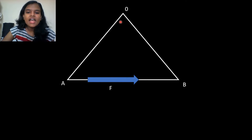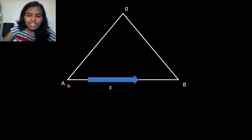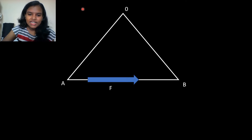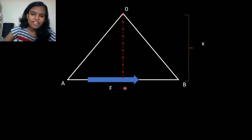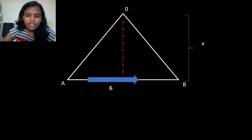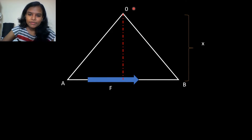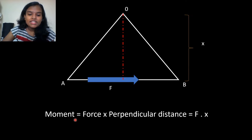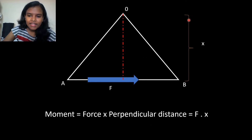The moment equals the perpendicular distance. This is where the perpendicular distance is. This is our line of action. This point is drawn on the line. This is the perpendicular distance x. We are drawing the moment: we have force F into x. So, moment is equal to force multiplied by perpendicular distance x.